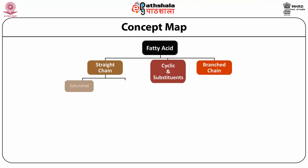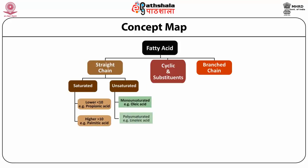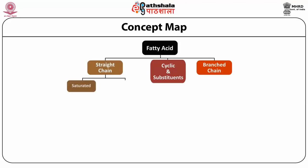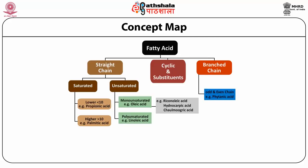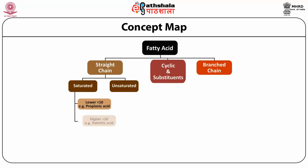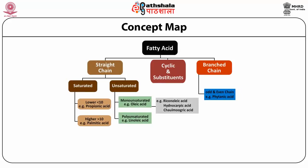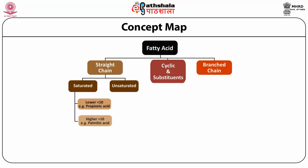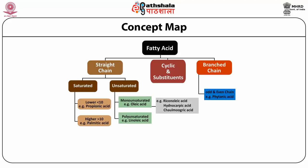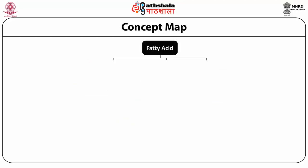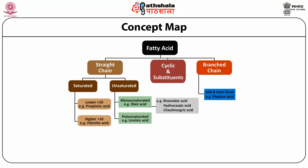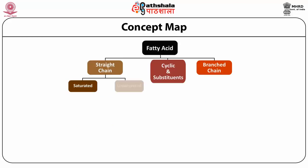Unsaturated fatty acids may be monounsaturated — for example, oleic acid — or polyunsaturated — for example, linoleic acid. Among the branched chain fatty acids there may be odd chain and even chain fatty acids; a famous example includes phytanic acid. The third category is cyclic and substituent fatty acids, with examples including ricinoleic acid, hydnocarpic acid, and chaulmoogric acid.